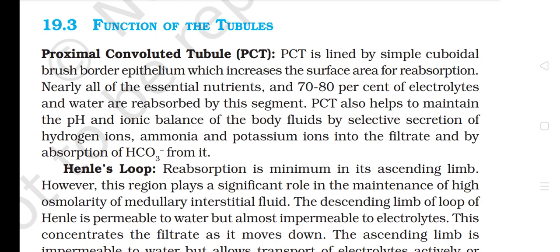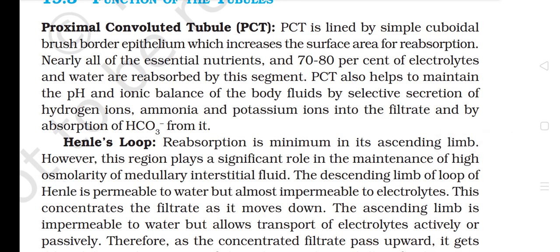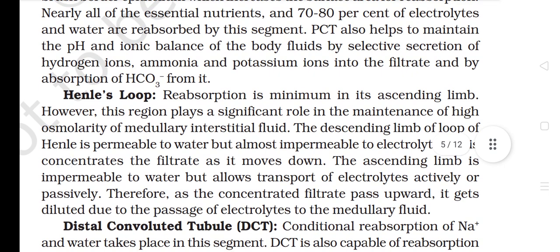Section 19.3: Function of the Tubules. The proximal convoluted tubule (PCT) is lined by simple cuboidal brush border epithelium, which increases the surface area for reabsorption. Nearly all essential nutrients and 70–80% of electrolytes and water are reabsorbed by this segment. PCT also helps maintain the pH and ionic balance of body fluids by selective secretion of hydrogen ions, ammonia, and potassium ions into the filtrate and by absorption of bicarbonate from it.